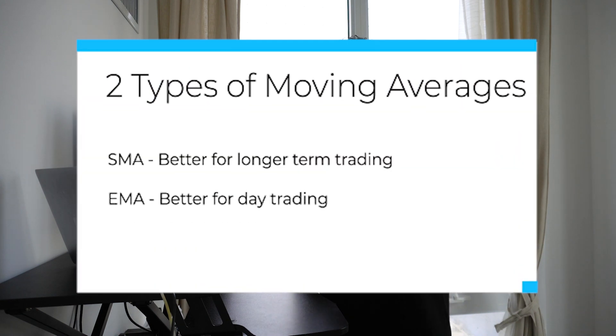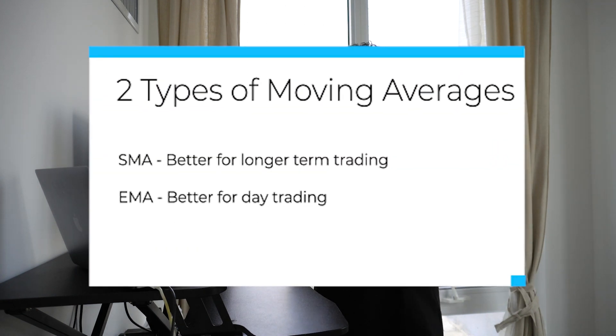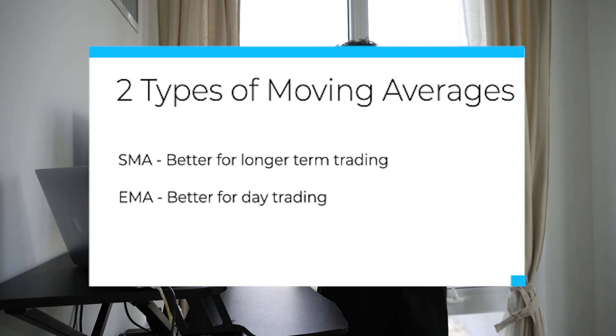While SMA just shows you the exact moving price, weighting every day the same over a period of time, EMA gives more weight to recent price changes and therefore is more responsive. For this reason, EMA is typically better used for day trading, and SMA is a little bit more preferable for longer-term trading such as swing trading or investing.